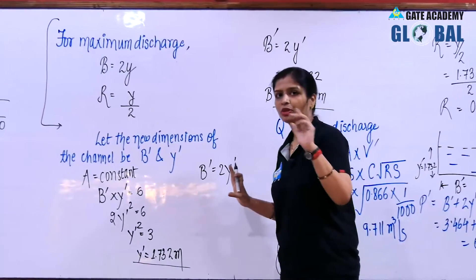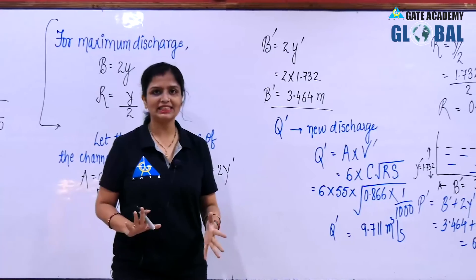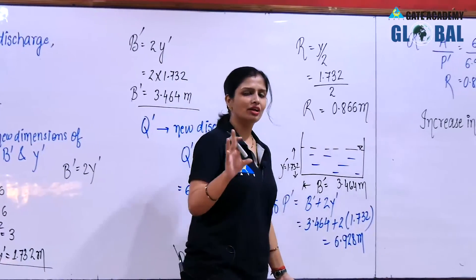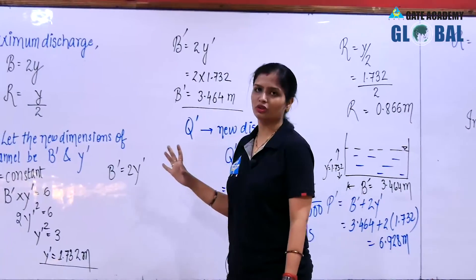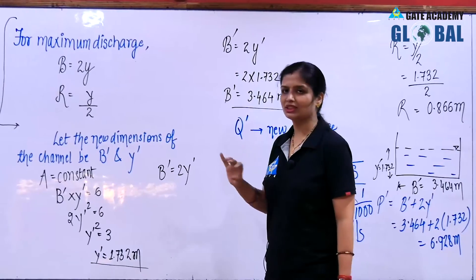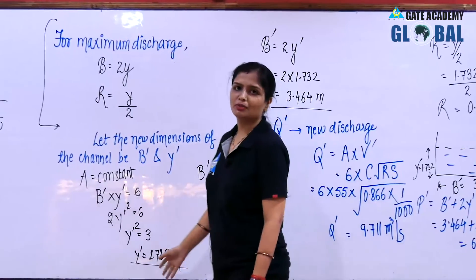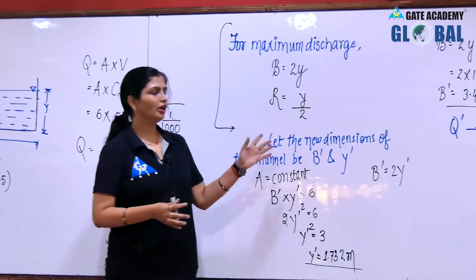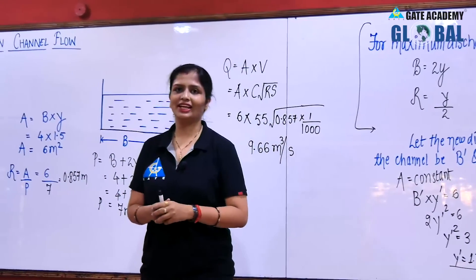You might ask whether a channel can be designed up to 3 decimal places — in practice you can round it off, say 3.5 meter and 1.7 meter, but here it was a conventional question so we kept 3 decimal places. I hope you are clear with this whole question. Thank you.